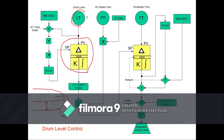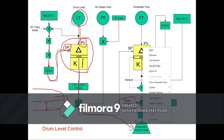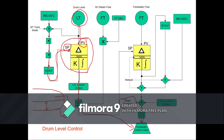In the single element strategy, the level transmitter feeds in as the PV to the PID controller. You're going to have an operator set point feeding into the drum level controller, and then the output in single element runs straight to the feedwater control valve. You'll notice it says 'T' for transfer function — whenever the single element option is selected, it transfers the output through that f(x) straight to the feedwater valve. Simple!